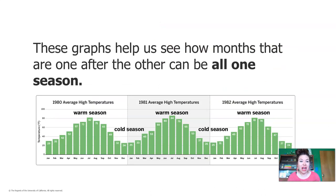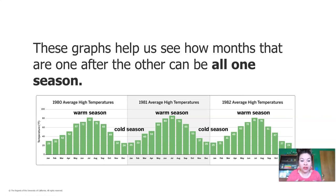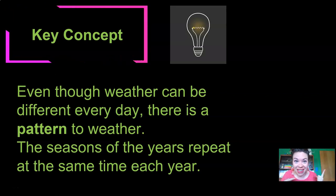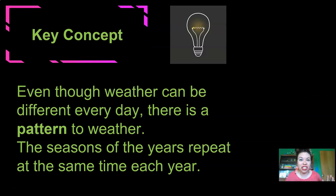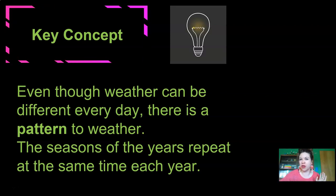These graphs help us see how months that are one after another can all be one season. What they did was they took 1980, 1981, and 1982 and stuck them together so that you can watch the pattern. Starting in January it's cold, then we have a warm season, then a cold season, then a warm season, then a cold season, then a warm season. That's a repeating pattern that happens over and over again. So even though weather can be different every day, there is a pattern to weather. The seasons of the year repeat the same time each year. We wouldn't expect to suddenly get cold snowy weather in the middle of summer, and we wouldn't expect hot weather in the middle of the cold season. Generally we can expect weather to follow the same pattern.